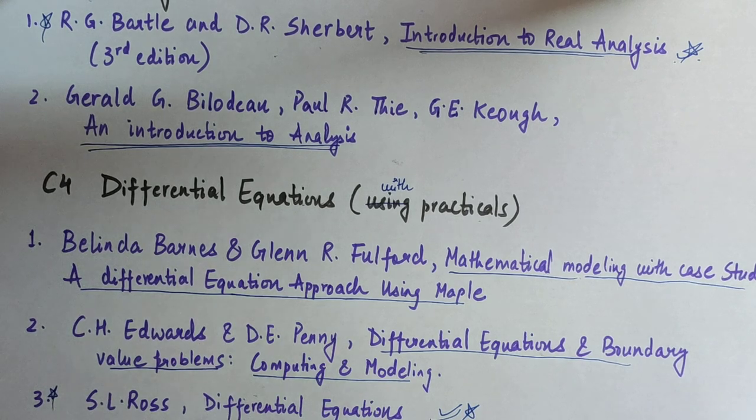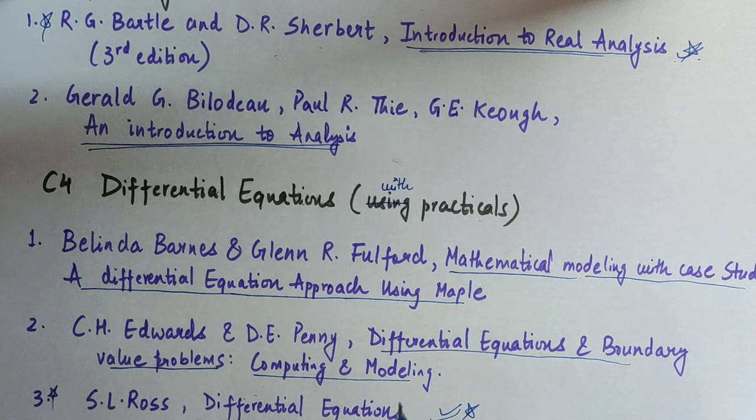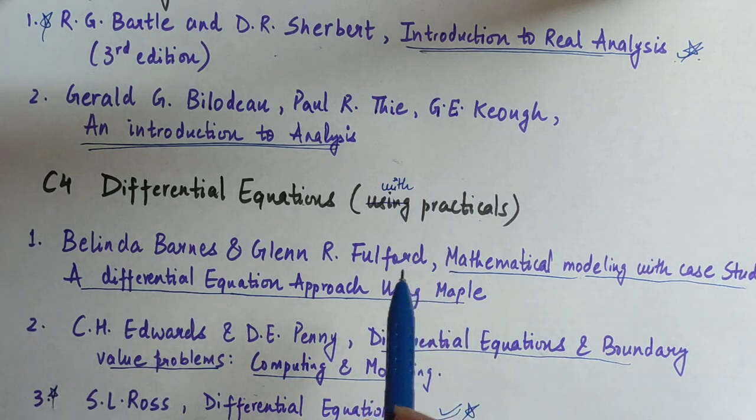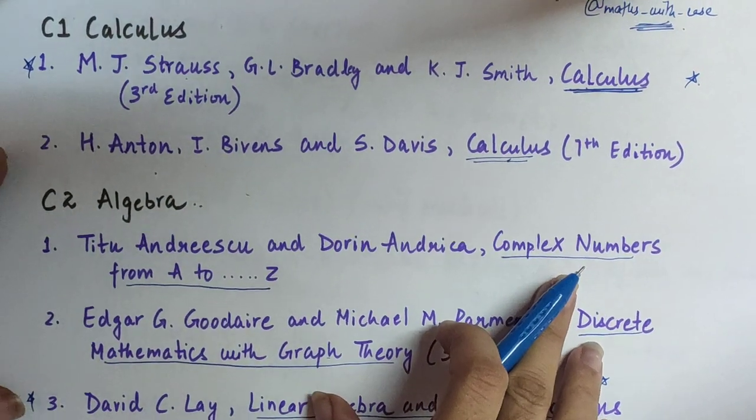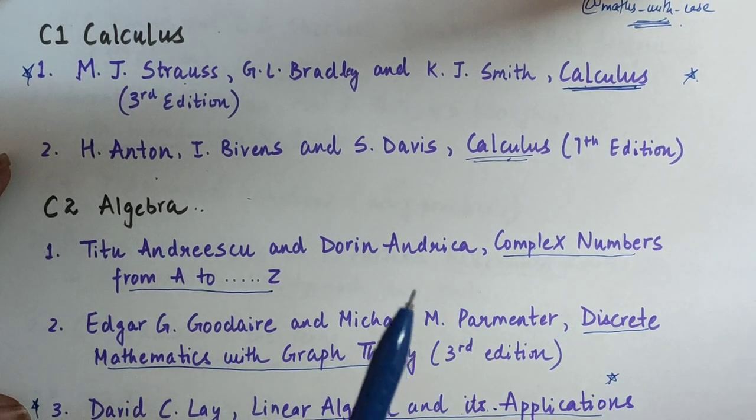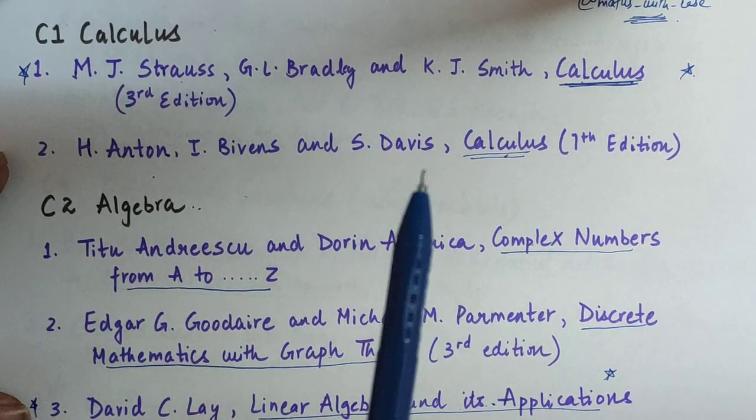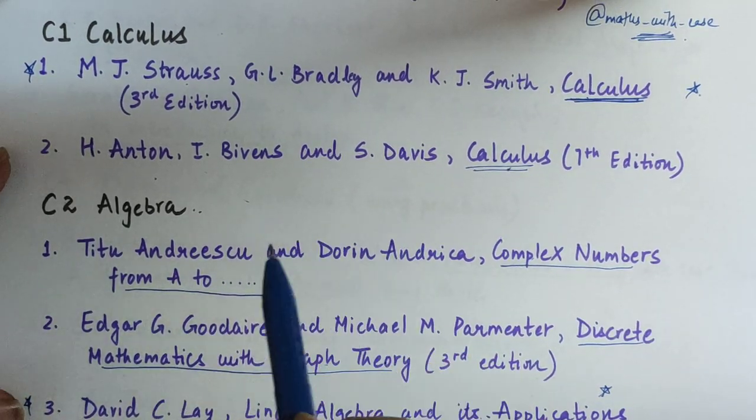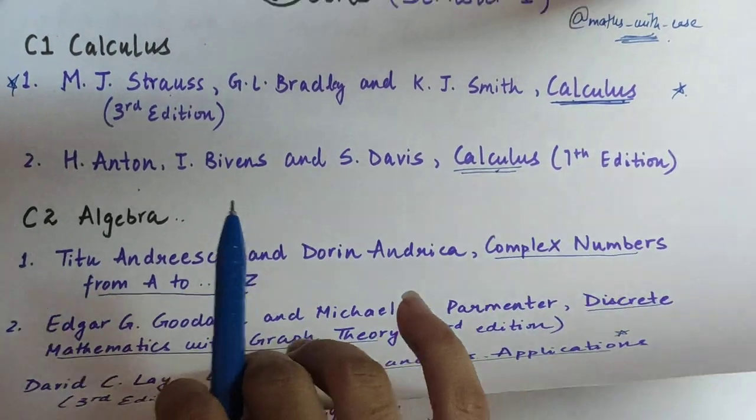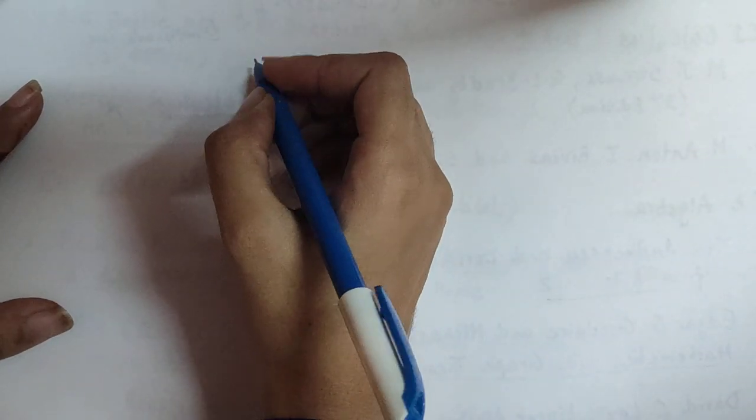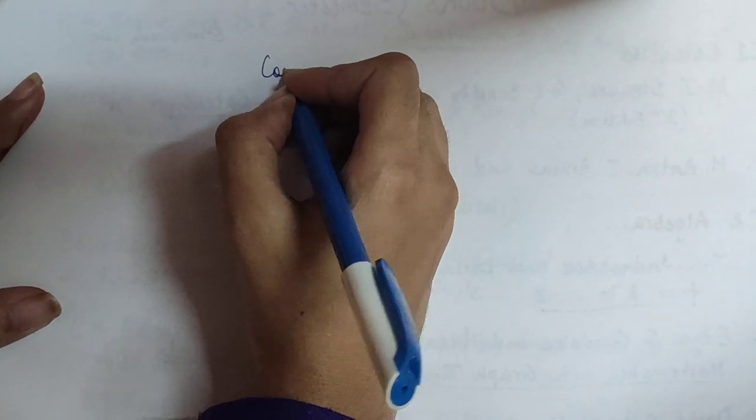Now this was about the book list of these four courses, and these four courses are the core ones: your C1, C2, C3, and C4 for the entire first year. This was about the book names of these core courses. If we now come to the other things which are left, we are done with the core courses and their books.